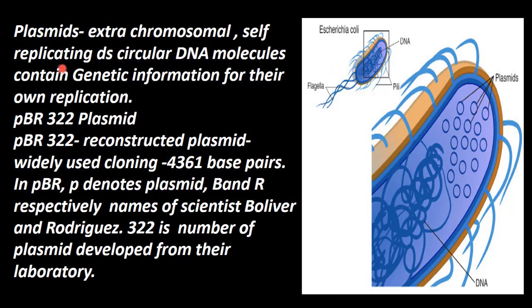These plasmids have a self-replicating capacity. They are double-stranded circular DNA molecules. They contain genetic information for their own replication.